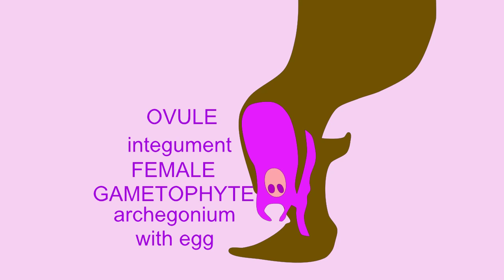The pole of the nucellus, which contains the archegonia — between two and six of these — is near an opening known as a micropyle, in the integument surrounding the structure. It is through the micropyle that pollen tubes and the male gametophyte enter to fertilize the egg within the archegonia.